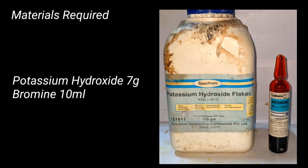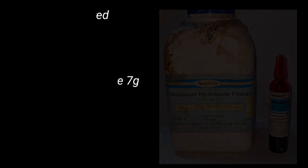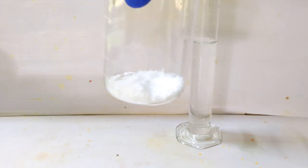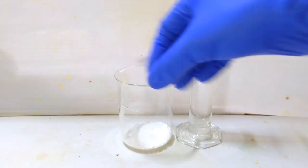Materials required include 7 grams of potassium hydroxide and 10 mL of liquid bromine. Start by taking 7 grams of potassium hydroxide in a 250 milliliter beaker.